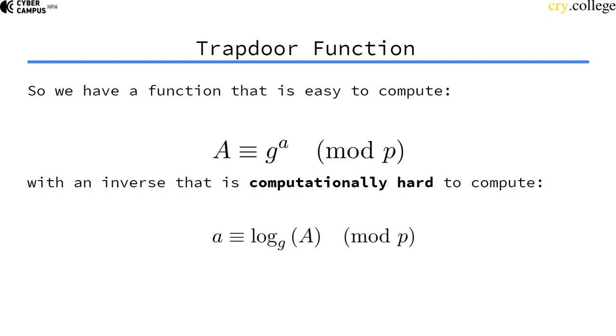the modulus p is a large number. So if p is large enough, no computer, no matter how strong on earth, will be able to calculate the discrete logarithm. We have here a construction where calculating in one direction by exponentiation is doable, but calculating it the other way with the discrete logarithm is computationally hard and infeasible for